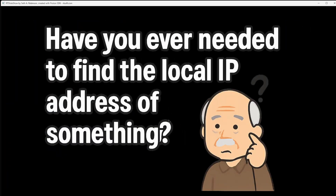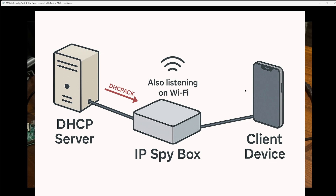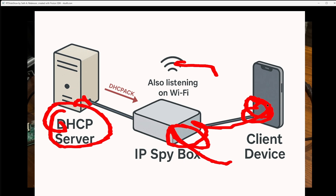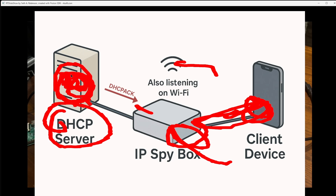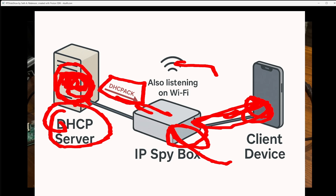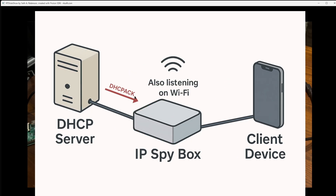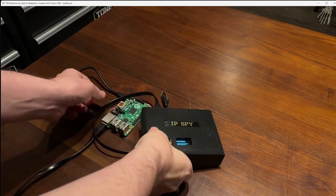Did you know that with most home systems — your cable box or internet modem — it actually acts as your DHCP server? Whenever you plug in a device on Wi-Fi or through a LAN cable, it asks for an IP address. The server handles conflicts so it won't give the same one to two devices, and it sends out a DHCP acknowledgment. If we're somewhere on the network — or to be sure, in between the two devices — we can actually capture this, and that is what this does.